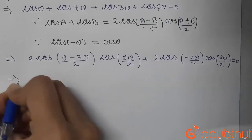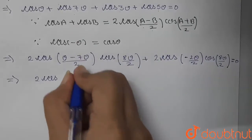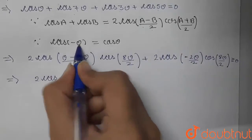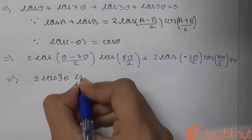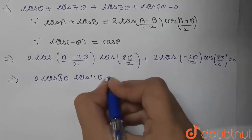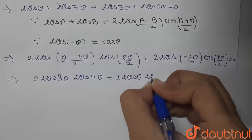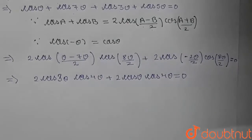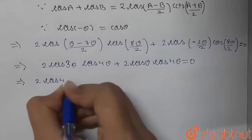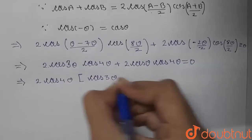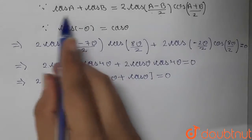Simplifying: (θ−7θ)/2 = −6θ/2 = −3θ, and since cos(−θ) = cos θ, this gives 2·cos 3θ·cos 4θ. Similarly the second term gives 2·cos θ·cos 4θ. So we have 2·cos 3θ·cos 4θ + 2·cos θ·cos 4θ = 0. We can take 2 and cos 4θ as common factors.